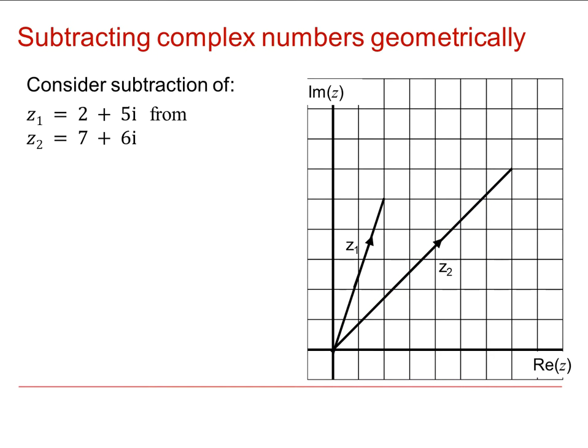Well now let's consider what happens if we've got subtraction of numbers. Here we've got the numbers z1 and z2. What happens if we try and subtract z1 from z2? Well obviously then we get z2 minus z1 is 7 plus 6i and minus 2 plus 5i.